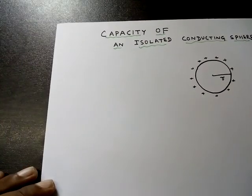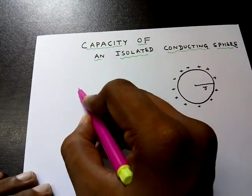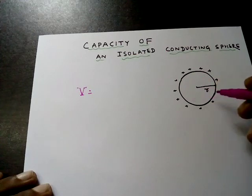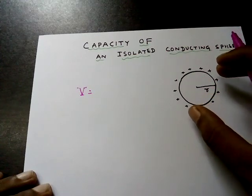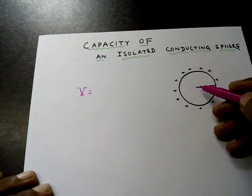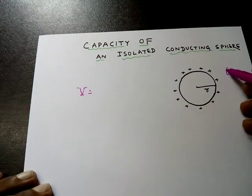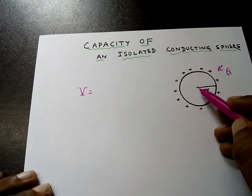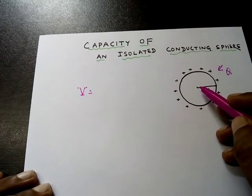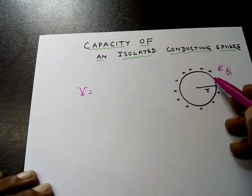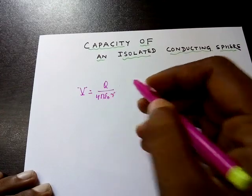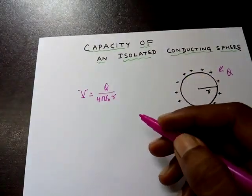What will be the potential V when charge is given to any conductor? Potential will rise. As it is a sphere, we can assume that the whole charge given is concentrated at the center. Let us suppose Q charge is given to it. We can assume that the whole charge Q is concentrated at the center, and due to this, the potential at the surface will be equal to Q divided by 4πε₀R. This is just the expression for the potential.